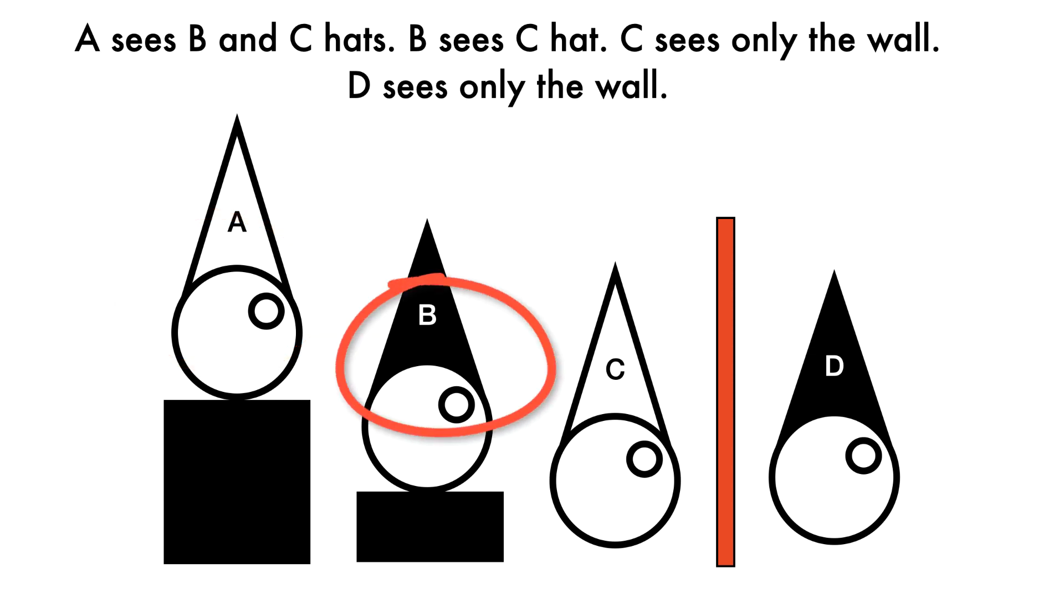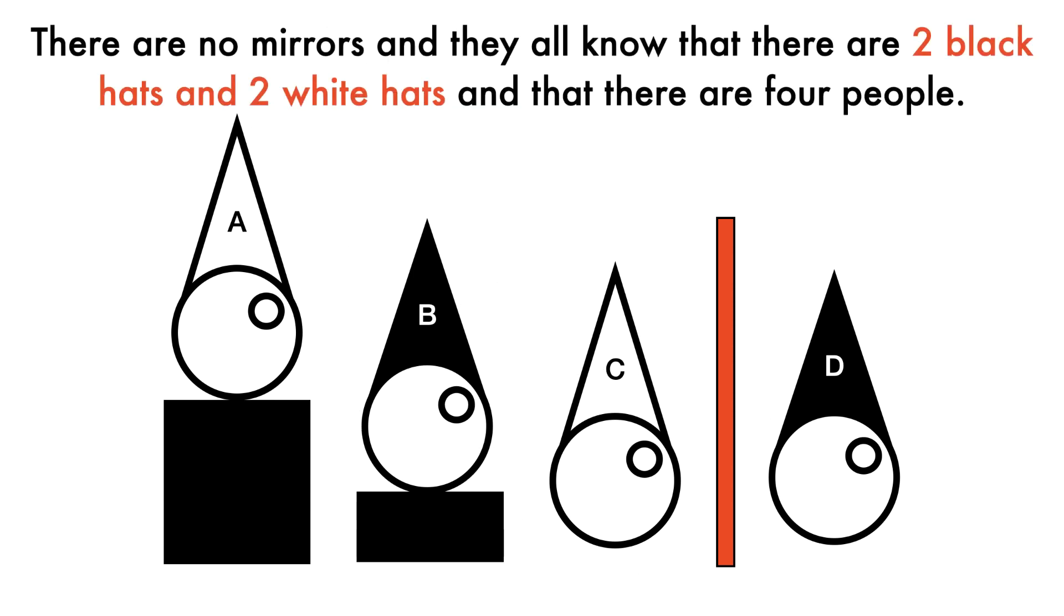Prisoner B stands on a smaller box and can only see prisoner C, who in turn can only see the wall. The fourth prisoner, D, stands on the other side of the wall and can see nothing of the other prisoners nor his own hat. They are not allowed to turn around or converse in any way.